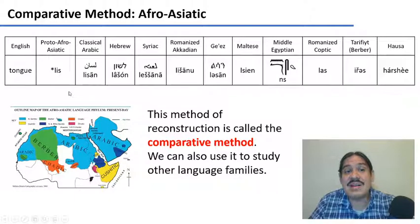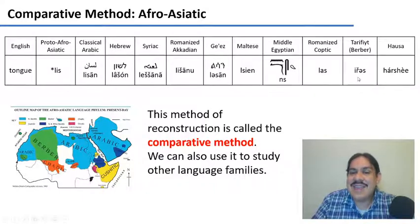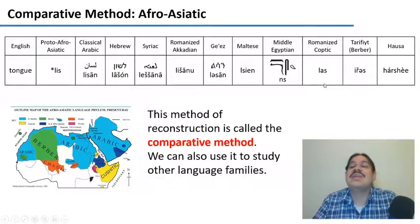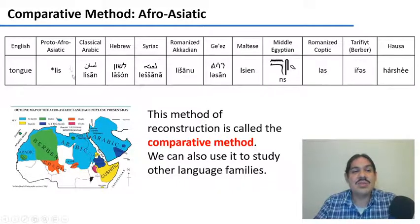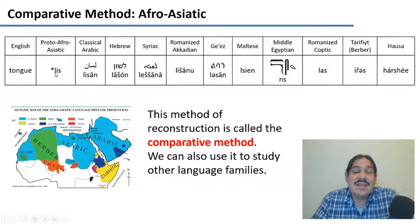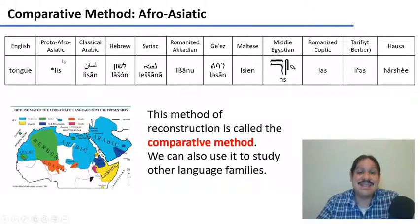Here is an example of a cognate set from Afro-Asiatic. The word lisan means tongue in Ancient Arabic. In Hebrew it's pronounced lashon. In Gez from Ethiopia, lisan. In Maltese, lisan. In Middle Egyptian it would be something like nis — notice that the N is not an L, but it is a voiced alveolar sound, so it's still similar. And in Tarifit, spoken in northwestern Africa, we have iresh with something like an R, which is again a voiced alveolar sound. We reconstruct the Proto-Afro-Asiatic word for tongue using the simplest solution: use the L, which appears most often, and propose a rule where L transforms into N for Middle Egyptian and into R for languages like Tarifit and Hausa. The Proto-Afro-Asiatic form for tongue is lis, with a final S because there are S-like sounds in all of the words.